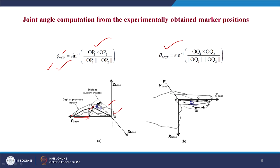Similarly, for the abduction-adduction angle, it is computed as the angle between the two vectors oq1 and oq2, where oq1 is the vector at the initial configuration connecting the MCP joint to the proximal interphalangeal joint PIP joint.